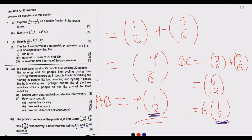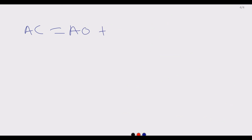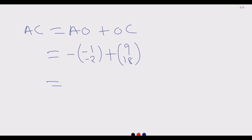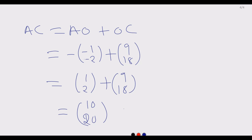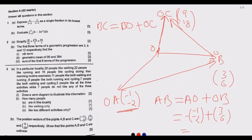We can also verify using AC: AC = AO + OC = -OA + OC = (1, 2) + (9, 18) = (10, 20) = 10(1, 2). Again the same direction vector (1, 2). Since all vectors AB, BC, and AC are scalar multiples of (1, 2), the three points A, B, and C are collinear. This is how you deal with this kind of question. Today we've answered the entire question 3, and in the next session we pick up from question 4.